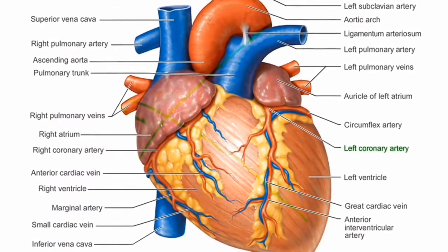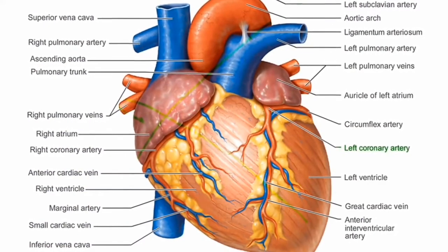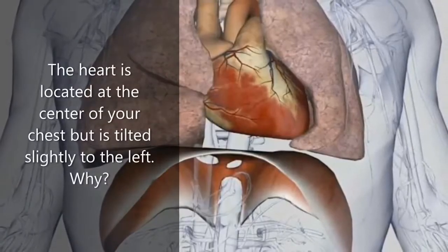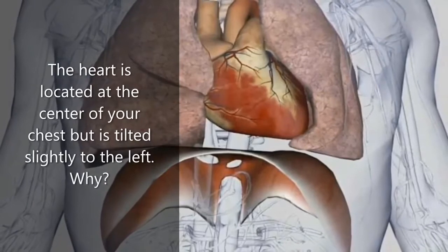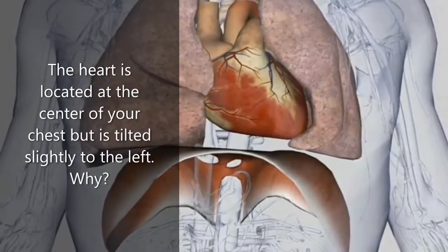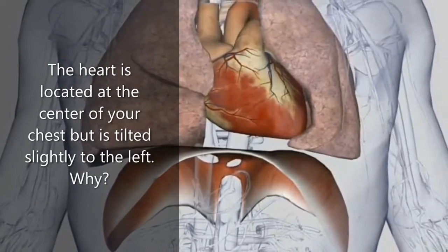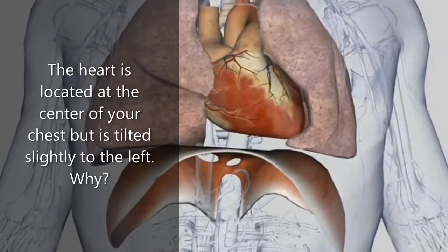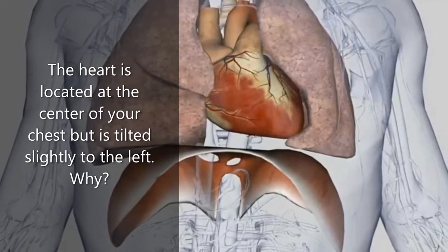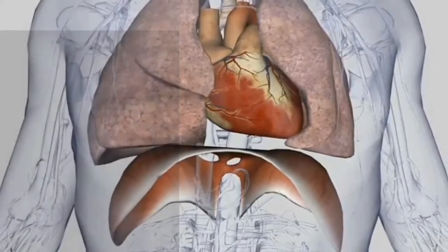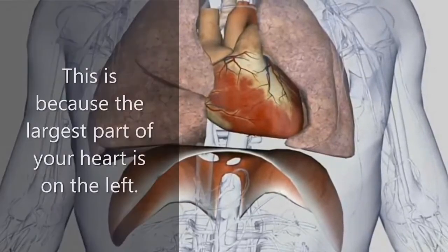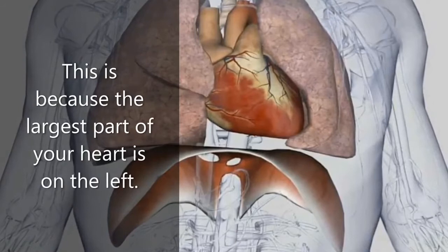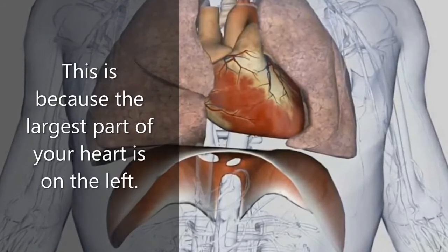The heart is located at the center of your chest but is tilted slightly to the left. This is because the largest part of your heart is on the left.